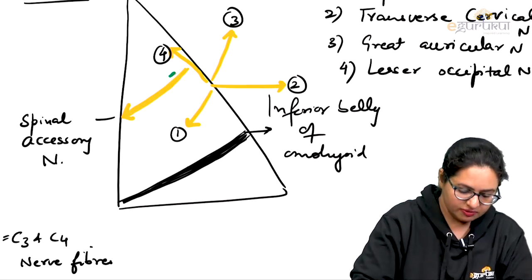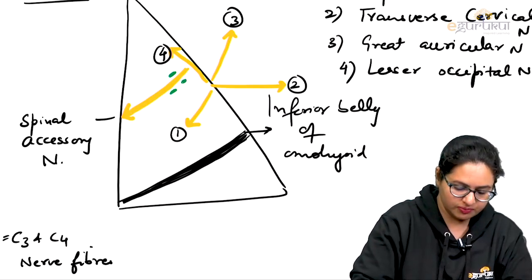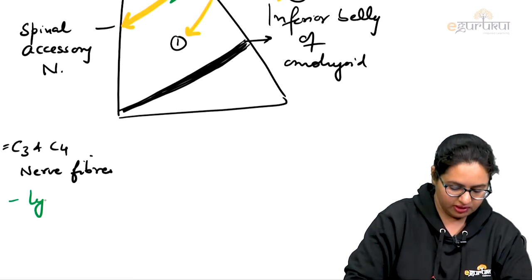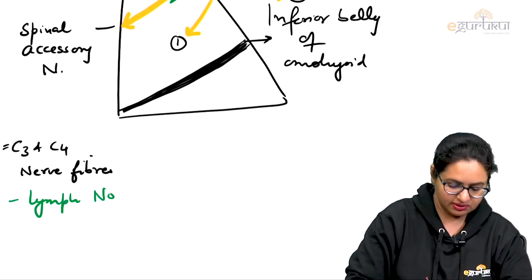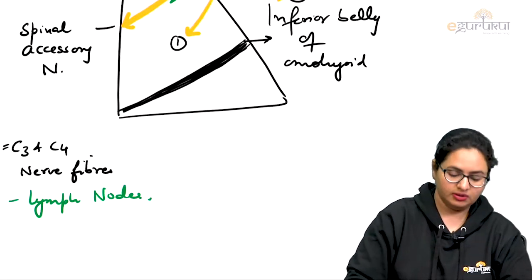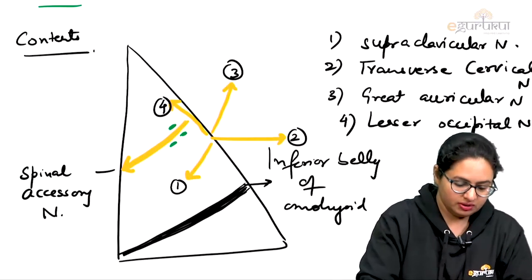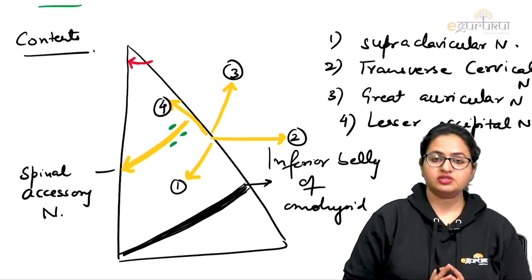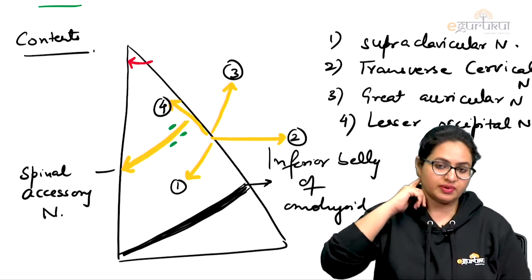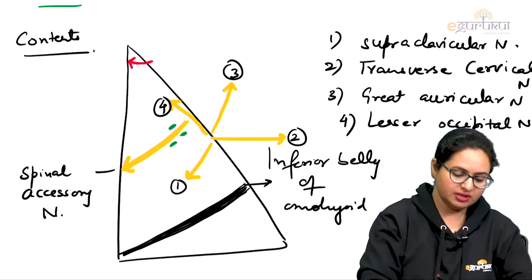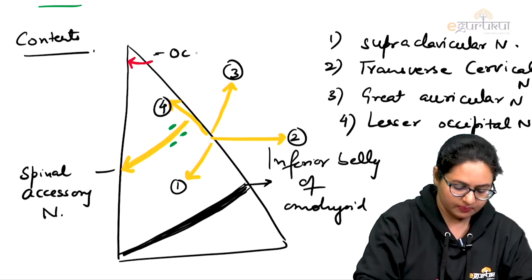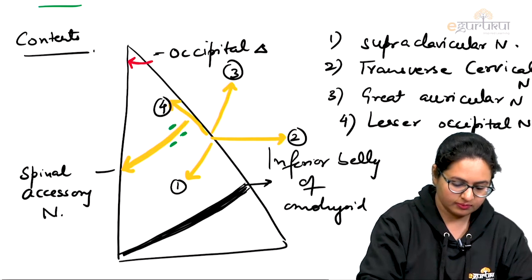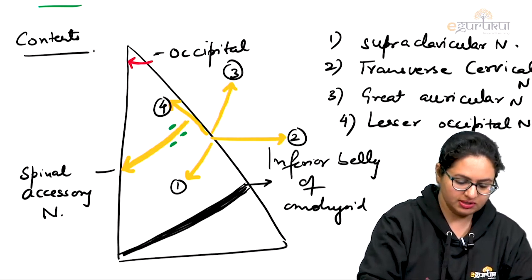Just near this spinal accessory nerve, we have a few lymph nodes which are also forming one of the contents. Towards the apex of the triangle, there is an artery running like this — it is a posterior branch of the external carotid artery, running posteriorly and backwards towards the occipital region. This artery is the occipital artery.